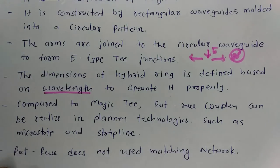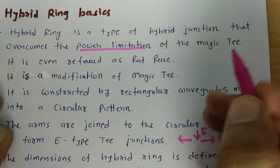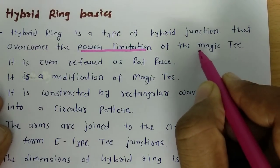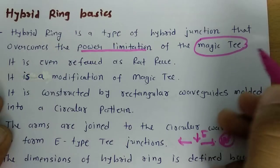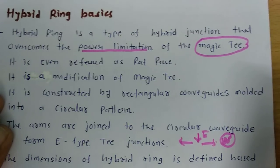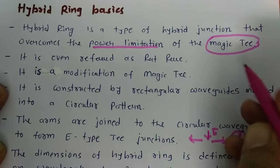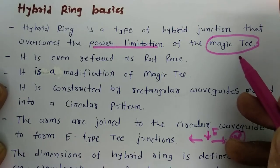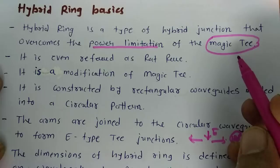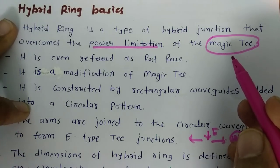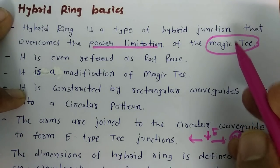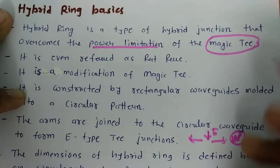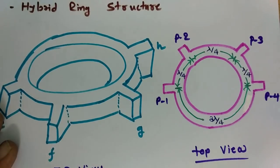With the hybrid ring, we don't need an impedance matching network, which was required when using the magic T. We have seen that one basic application of the magic T is as a duplexer, and when using a magic T as a duplexer we need a matching network. But that is not needed when using a hybrid ring as a duplexer. In the working section, I'll show how the hybrid ring functions as a duplexer.